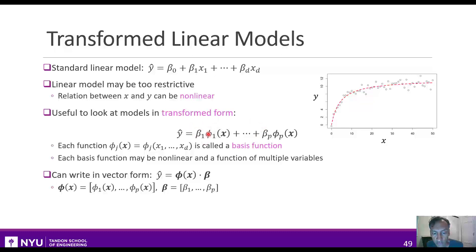Once you write it in this form, it will be sometimes useful to define the vector of all of the basis functions. So for each x, you get a p-dimensional vector. And in this case, the prediction is the inner product between boldface phi and beta.